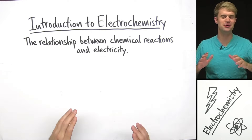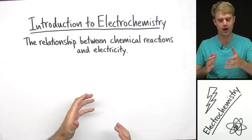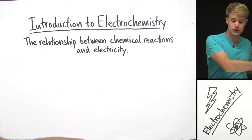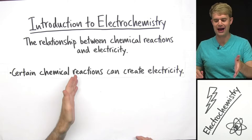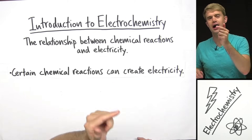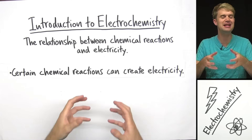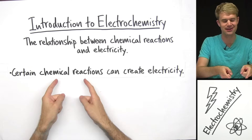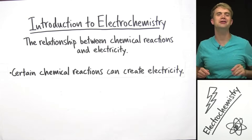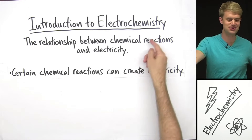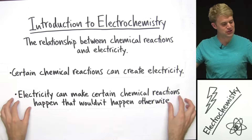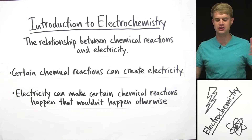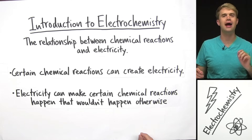When we're studying electrochemistry, there are basically two main ways that chemical reactions and electricity interact. The first: certain chemical reactions can create electricity. That's what's going on in a battery — there are chemicals inside the battery, they react together making a chemical reaction, and that chemical reaction creates electricity. The second is that electricity can make certain chemical reactions happen that wouldn't happen otherwise.